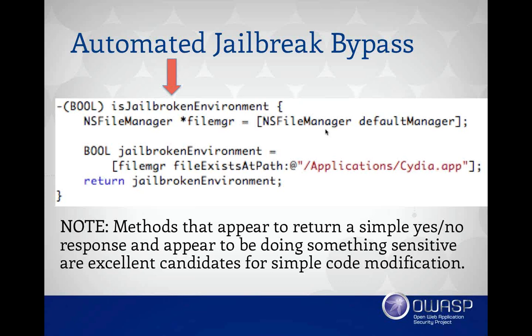For instance, we could intercept fileExistsAtPath. If we see that someone's looking for the Cydia app within fileExistsAtPath, then just simply say no, there's nothing there. So there's a number of different approaches: you could do method swizzling, or binary modification where you simply go in with a hex editor and force it to always return false. That's a slight touch on the code modification side.